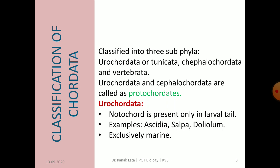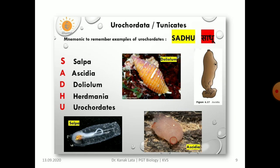Now let us see about the classification of Chordata. Chordata is classified into three sub-phyla, namely Urochordata or Tunicata, Cephalochordata and Vertebrata. Urochordata and Cephalochordata are called proto-chordates. In Urochordata, notochord is present only in the larval tail and they are exclusively marine. Common members are Ascidia, Salpa and Doliolum. A mnemonic to remember examples of Urochordata is SADHU — S-A-D-H-U — where S stands for Salpa, A for Ascidia, D for Doliolum, H for Herdmania and U for Urochordata.